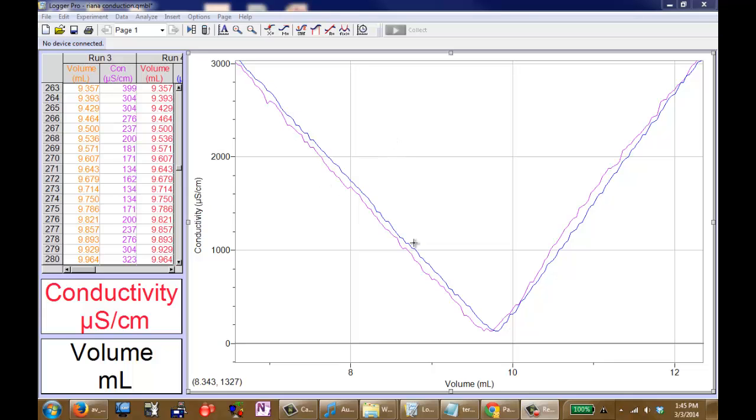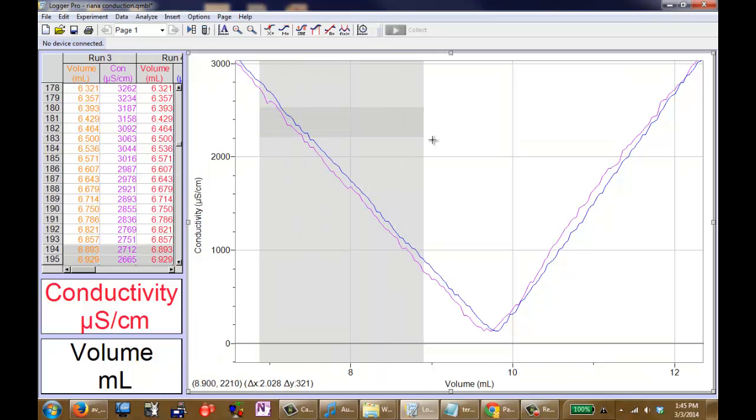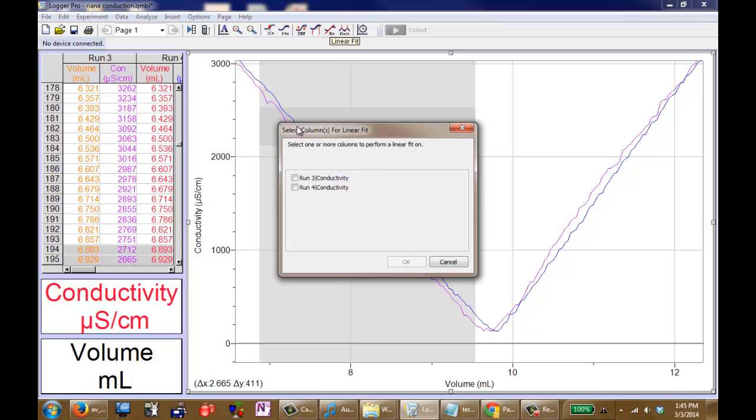These are the two runs that we did - certainly we did more than one although only one was shown in the video. Let me demonstrate how to analyze this data. First we'll highlight a linear section of the data and ask Logger Pro to give us a linear interpolation.